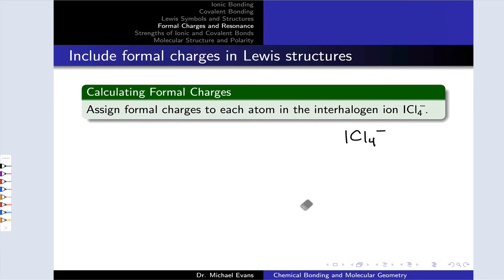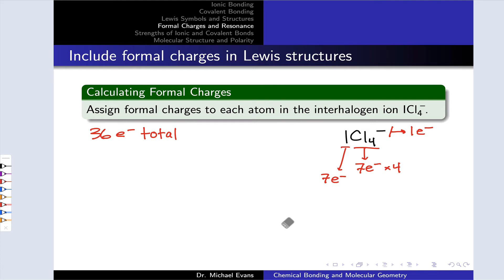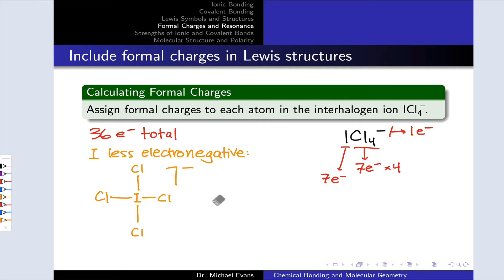Let's practice by assigning formal charges to each atom in the interhalogen ion ICl4 minus. We start by drawing the Lewis structure. Counting up valence electrons: seven from iodine and seven each from the four chlorines, plus one additional electron due to the negative charge, giving a total of 36 electrons. Since iodine is less electronegative than chlorine, we place I at the center surrounded by the four chlorines. With the sigma skeleton drawn and the negative charge noted, we've made four bonds using eight electrons, leaving 28 electrons remaining.